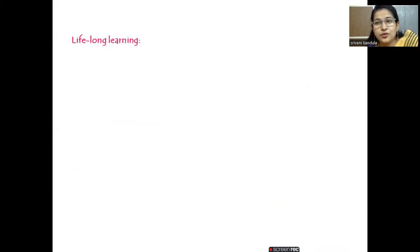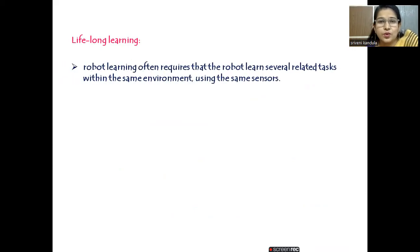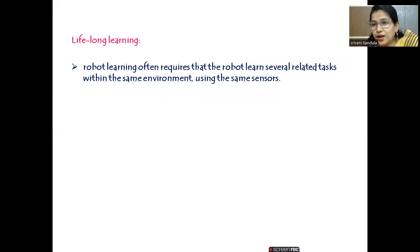The next problem is lifelong learning. There is no end to reinforcement learning — it is a lifelong learning problem. Robot learning often requires that the robot learn several related tasks within the same environment using the same sensors, but from time to time it updates its policy, learns new things, and tries to become more and more efficient.